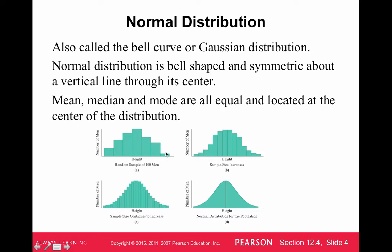Most people are close to the average height, which is in the middle, and then we have an approximately equal number tailing off of tall people and short people. This is showing what the bell curve starts to look like if we sample more and more people — a sample of 100 men, then more and more until it's basically perfectly bell-shaped. This is what we call the normal distribution, where the mean, median, and mode — but mainly the mean — is in the middle, with an equal number of people to the right and left of the mean.